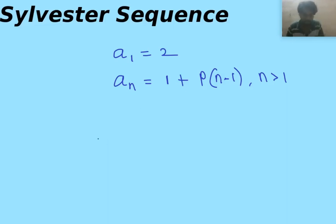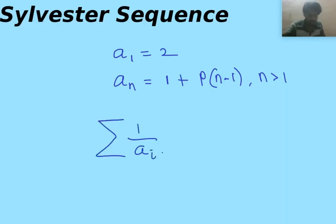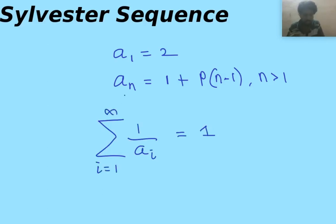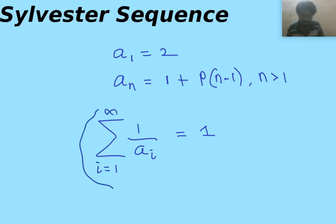The result we are going to talk about is this: the summation of the reciprocals of the Sylvester sequence elements converges to 1. That is, the summation of 1 by a_i as i ranges from 1 to infinity converges to 1. This is cool — this is what we are going to see in this video.